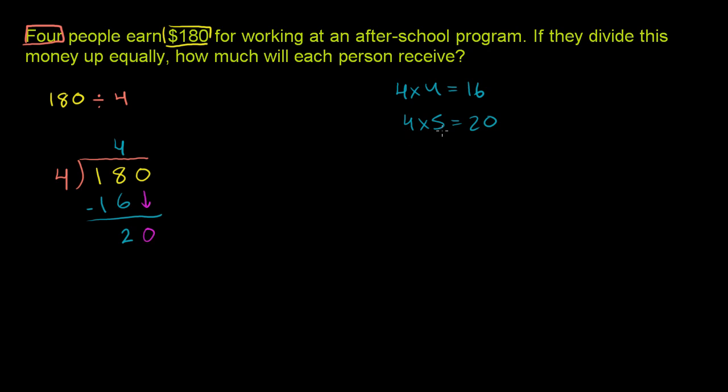Well, we just wrote it over here. 4 times 5 is equal to 20. So 4 goes into 20 five times. 5 times 4 is 20. You subtract, and you have no remainder left over.